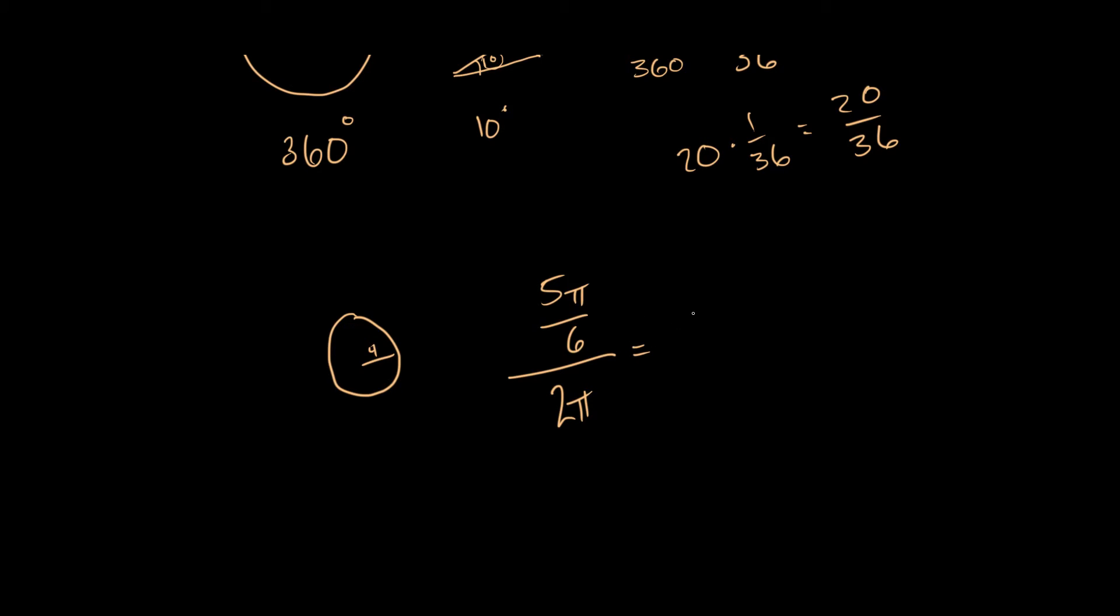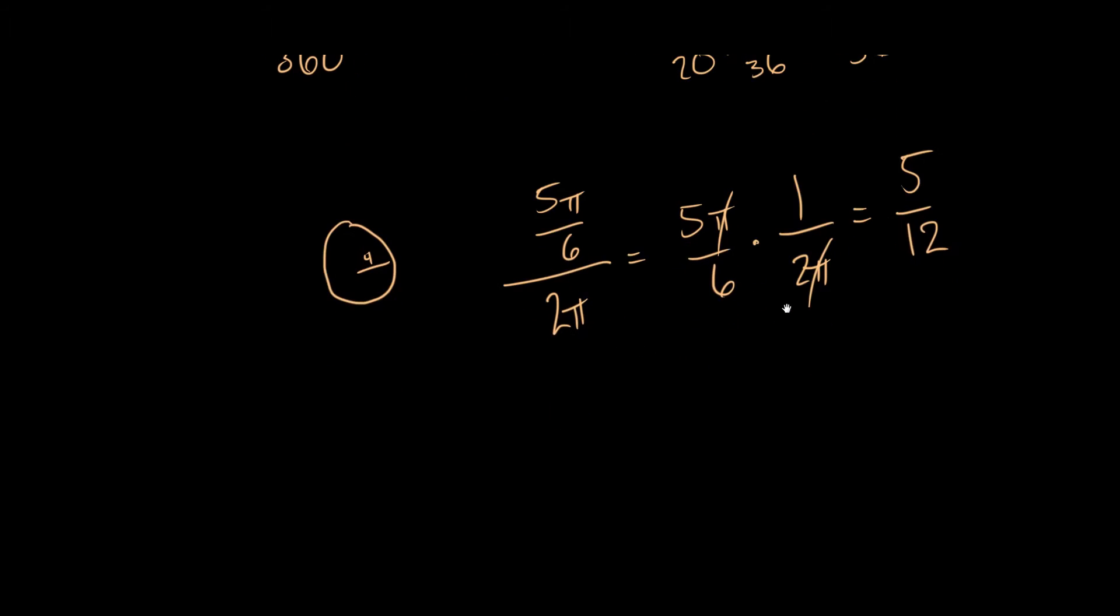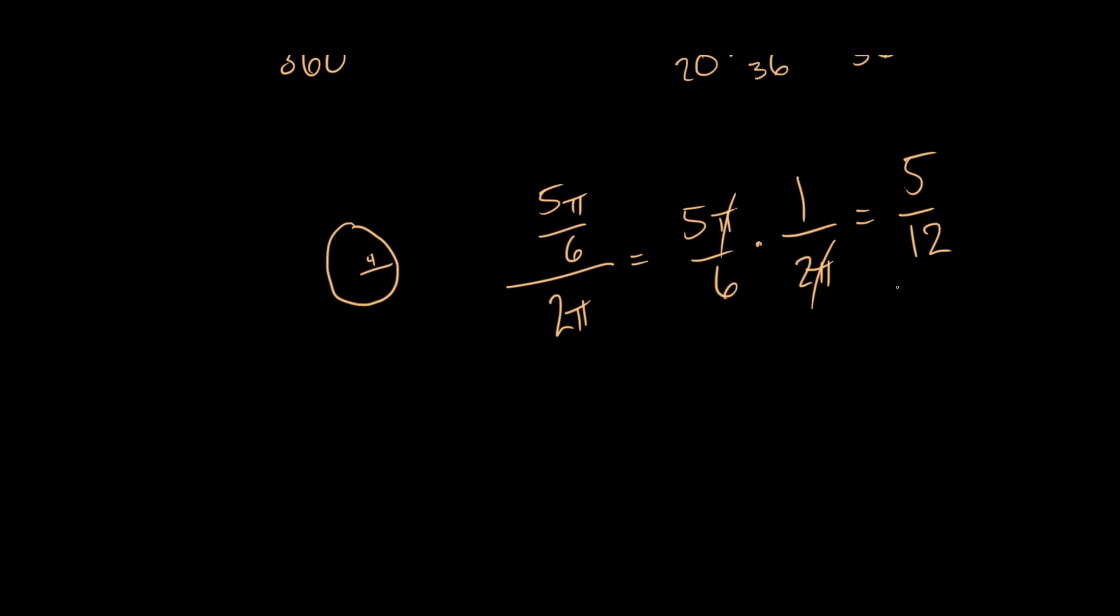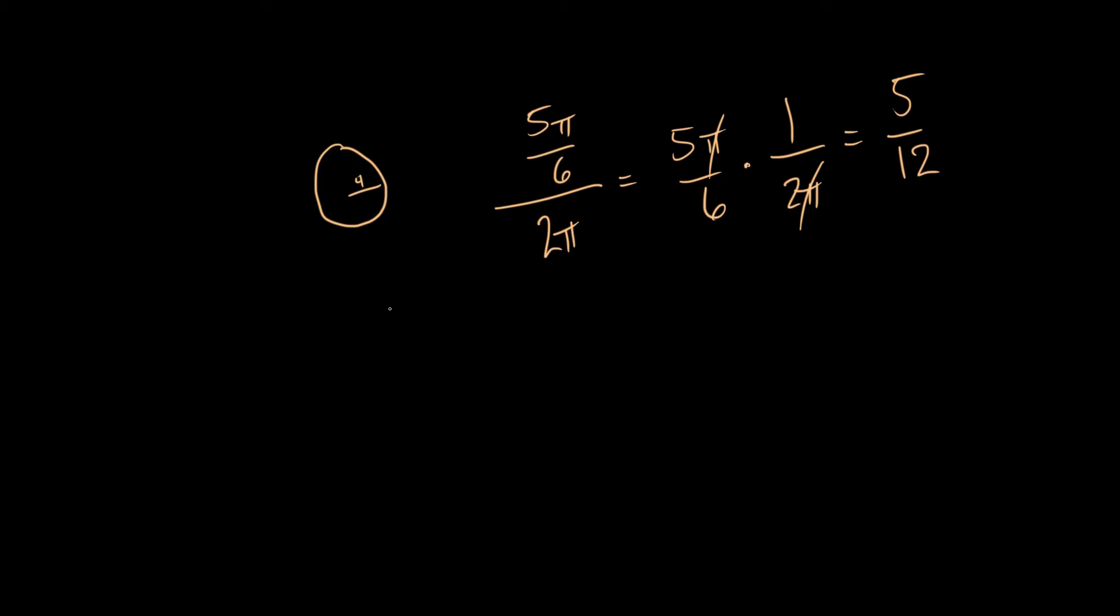So I'm going to rewrite this as a multiplication problem. It's going to be 5π over 6 times 1 over 2π. The π's are going to cancel and I'm going to get 5 over 12. So this is 5/12 of the circle. So what's the circumference of this entire guy? Well that's just 2πr or 2 times 4 times π which is 8π.